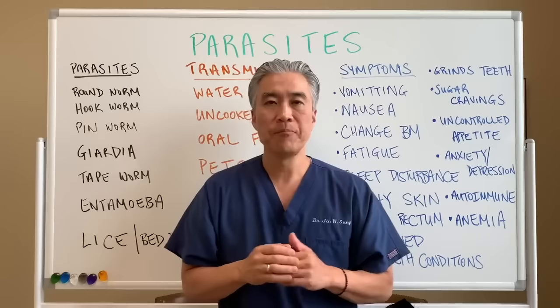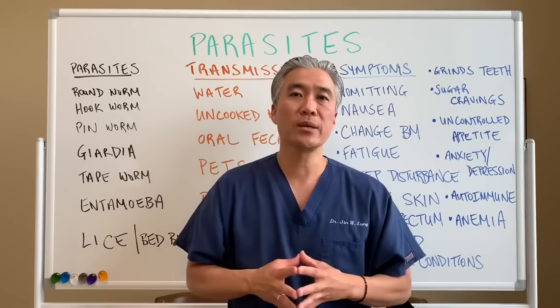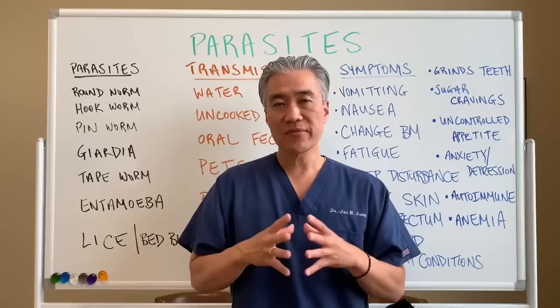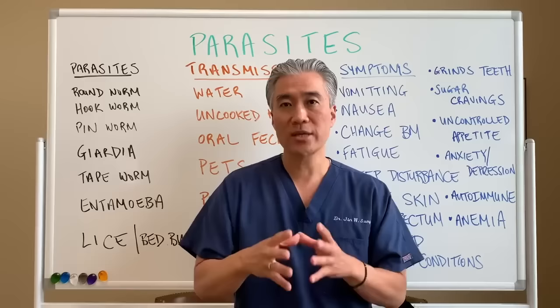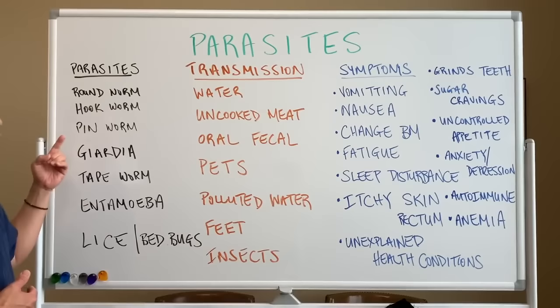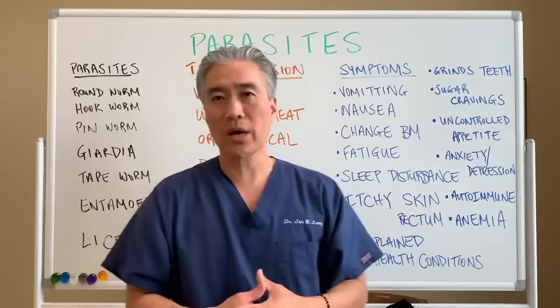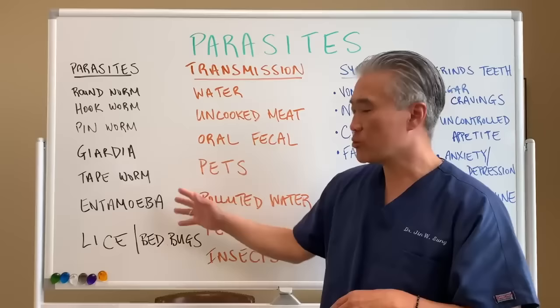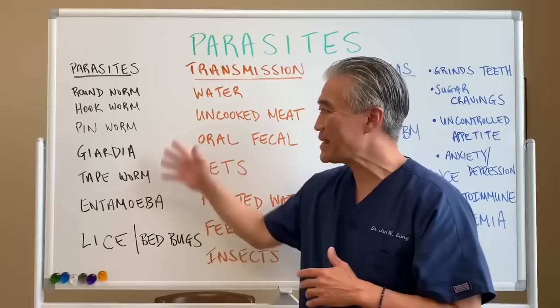Today we're going to talk about parasites — what are they, how do we get them, how do we treat them, and how do we prevent them? On the board is a list: roundworm, hookworm, pinworm, giardia, tapeworm, entamoeba, lice, bedbugs, Lyme disease, H. pylori infections. Basically, a parasite is anything living in our body that is detrimental with no benefit. As high as 60–80% of the population may have some sort of parasitic infection and not realize it.